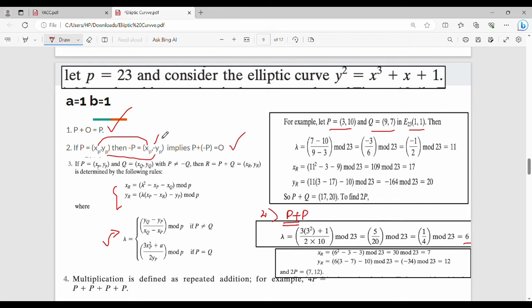Finally, multiplication is defined as repeated addition. For example, 4P is defined as P + P + P + P. We multiply by repeatedly adding the result to the next point.